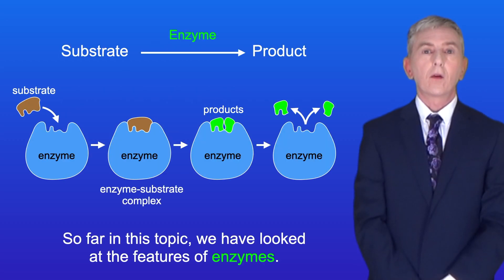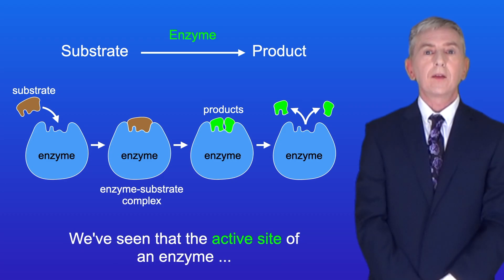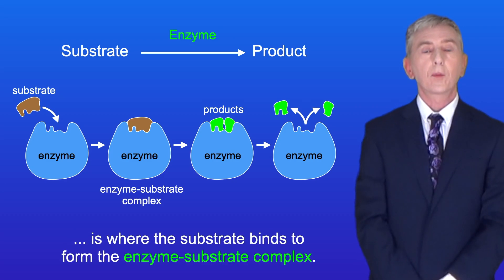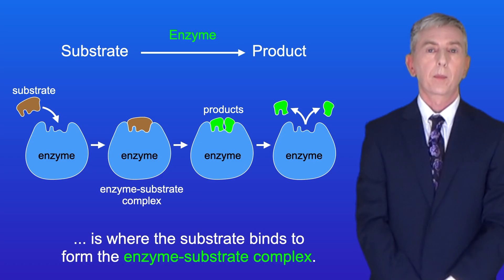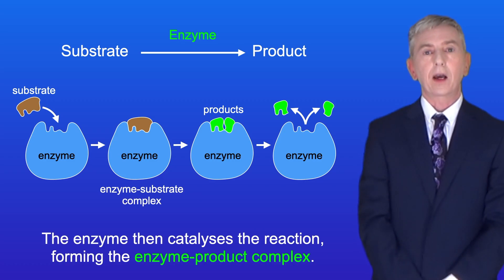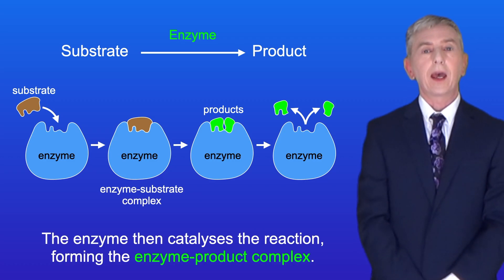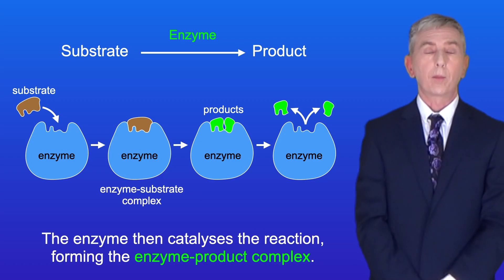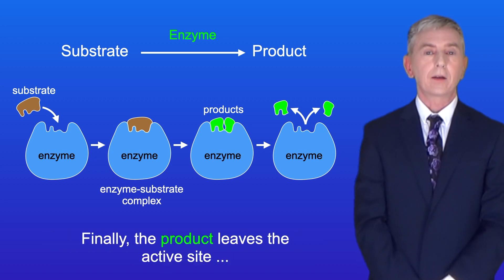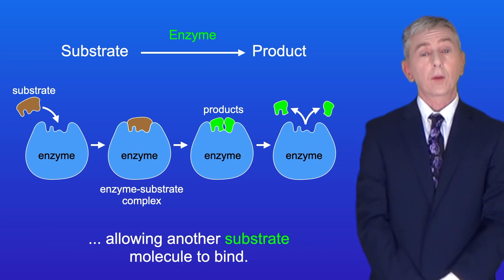So far on this topic we've looked at the features of enzymes. We've seen that the active site of an enzyme is where the substrate binds to form the enzyme-substrate complex. The enzyme then catalyzes the reaction, forming the enzyme-product complex. And finally the product leaves the active site, allowing another substrate molecule to bind.